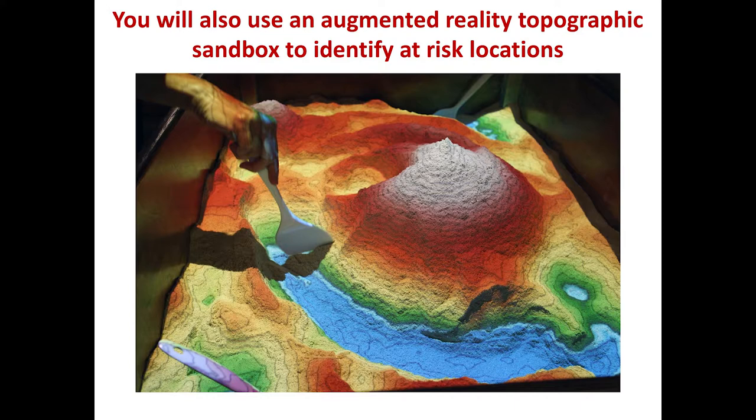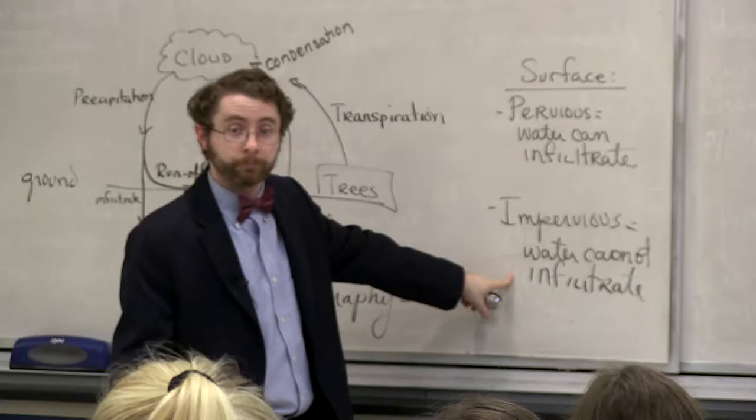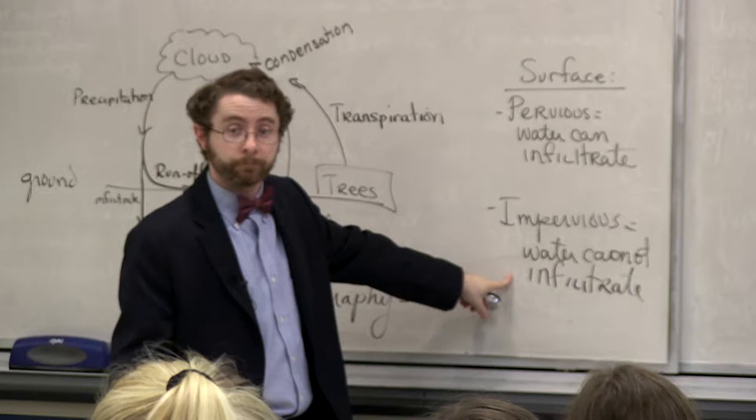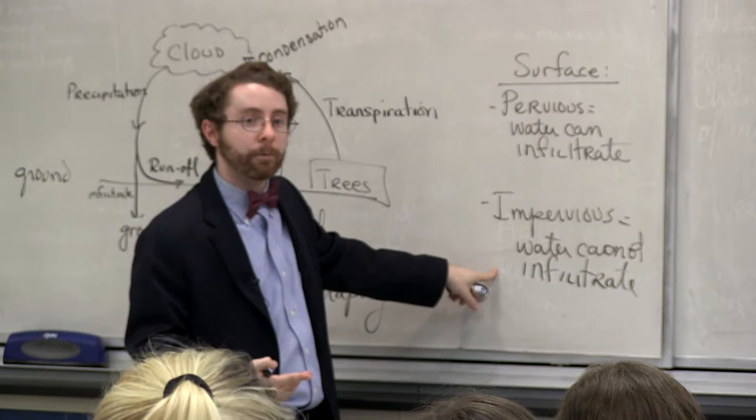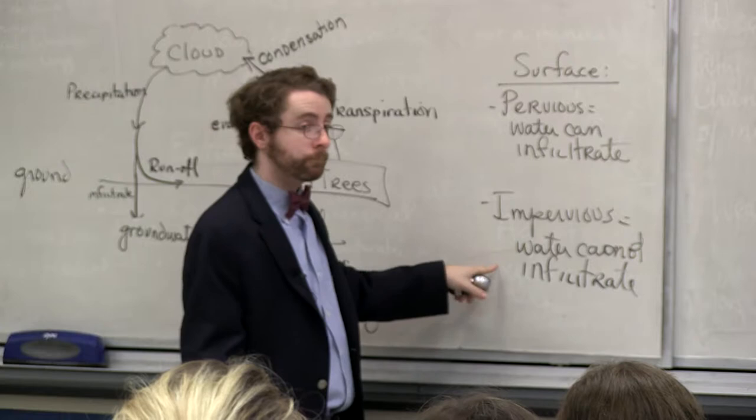Then determine which area has pervious surfaces and which has impervious surfaces. Which one will have more runoff damage? The impervious area — correct. You're going to use all three concepts — hills, slope, and surface type — to figure out where on the map is going to be at most risk for runoff damage.